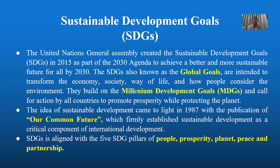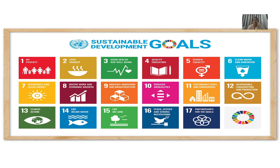SDGs are aligned with the five SDG pillars — what we can call 5P: People, Prosperity, Planet, Peace, and Partnerships. There are 17 Sustainable Development Goals in total, and we need to be aware of each one.